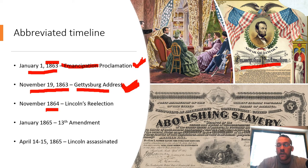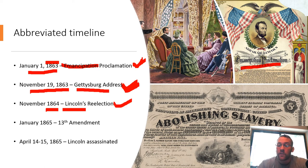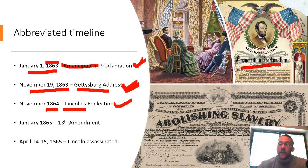A year after his Gettysburg Address, Lincoln is reelected. This is where Lincoln felt vindicated — he put everything on the line, signed a controversial Emancipation Proclamation, and gave the Gettysburg Address telling people they were going to stay in a war happening in their backyards. People reelected him and said, 'You made two very hard decisions, but I guess we support those.' Lincoln took this as an opportunity to push forward even harder on abolishing slavery and winning the Civil War.